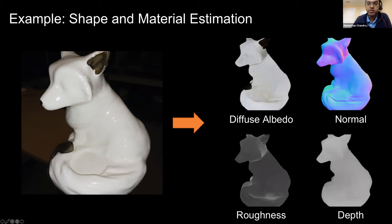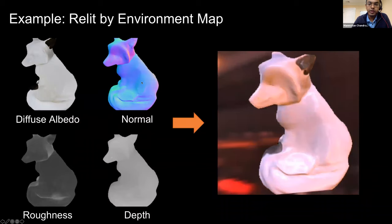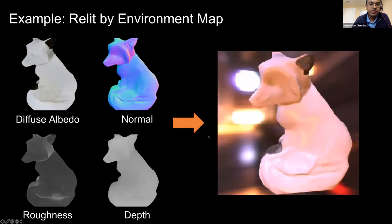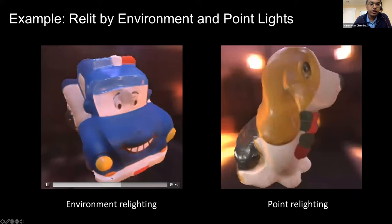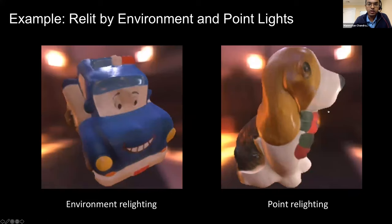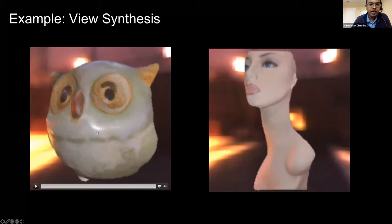On real data, once we estimate the shape and SVBRDF of an object, we can apply it to relighting. Rendering under a novel complex environment map, the specular highlights move realistically across the surface even for shapes with non-convexities and discontinuities. With spatially varying BRDF, relighting under both environment lights and point light sources produces realistic specular reflectance and shading. We also show novel view synthesis where specular highlights and shading look reasonable even while rotating the object.